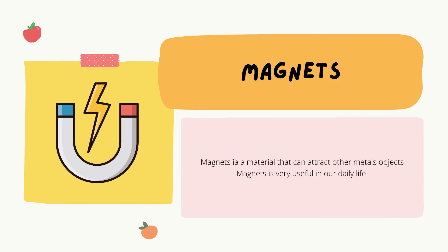Moving on to our lesson on magnets. The first thing you have to know is: what is a magnet? A magnet is a material that can attract other metal objects. Magnets are very useful in our daily life.